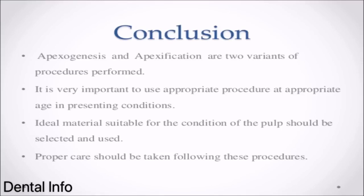Conclusion: Apexogenesis and Apexification are two variants of procedures performed. It is very important to use the appropriate procedure at the appropriate age and in the presenting conditions. The ideal material suitable for the condition of the pulp should be selected and used. Proper care should be taken following these procedures.